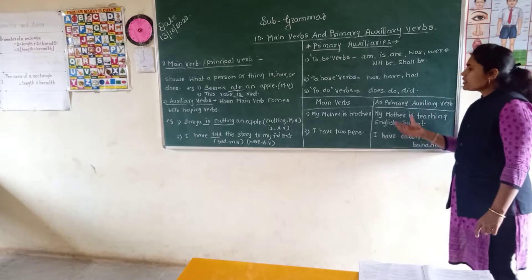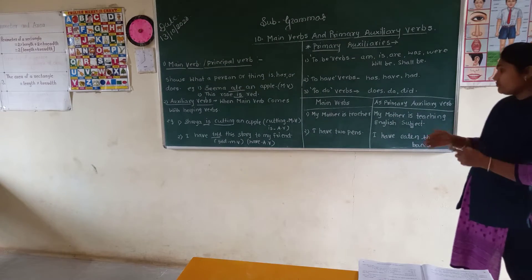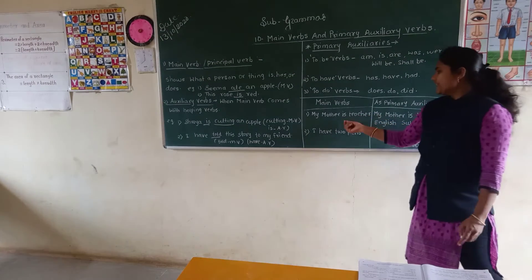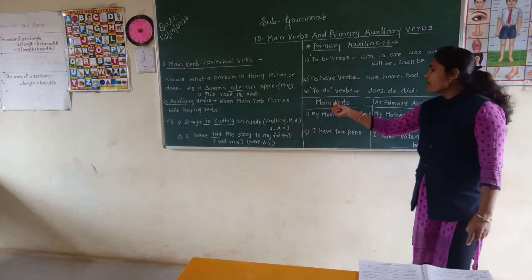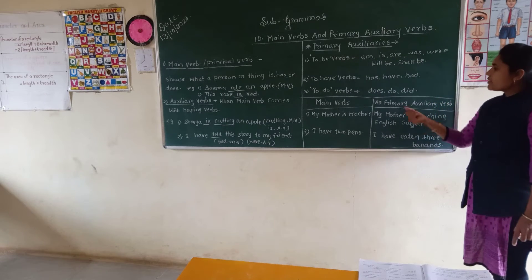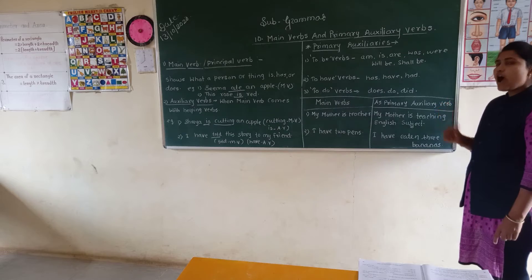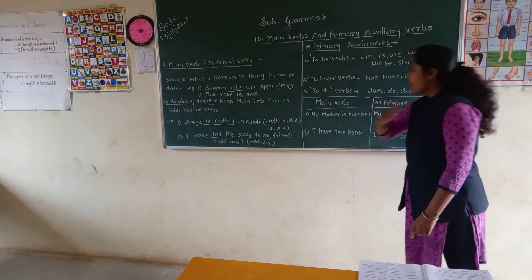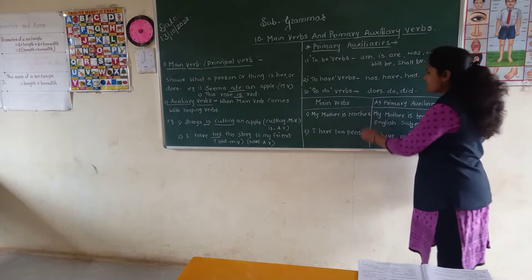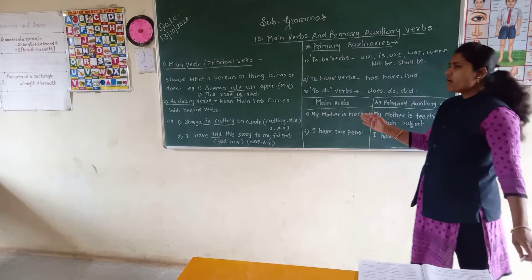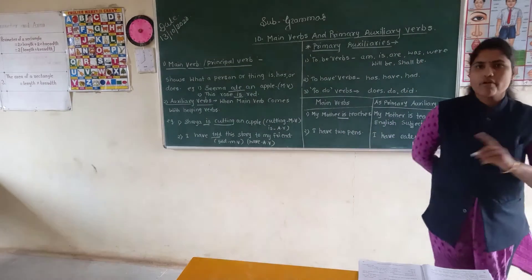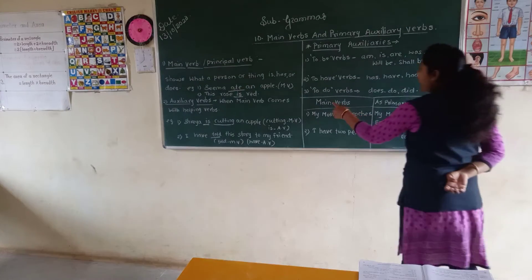Now I have some examples to clarify how the same word can come as the main verb in one sentence and as a primary auxiliary verb in another sentence. First, 'My mother is a teacher.' No helping verb came — only 'is' came, so 'is' is playing the role of the main verb. That's why 'is' is the main verb here.